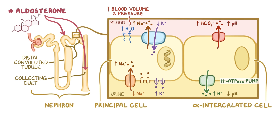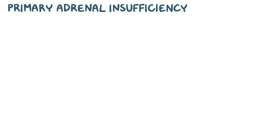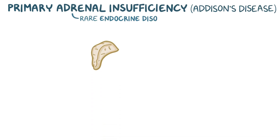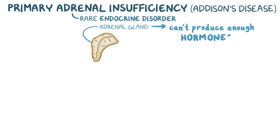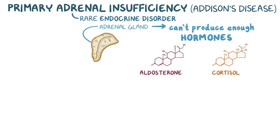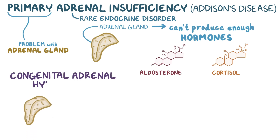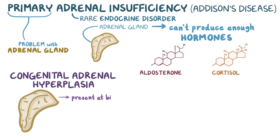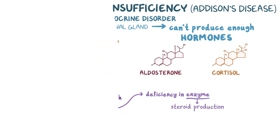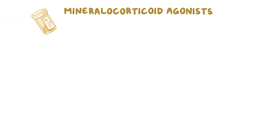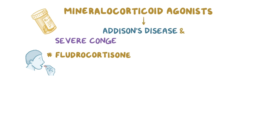Mineralocorticoid receptor agonists are used to treat pathological conditions where the mineralocorticoid level is lower than normal. For example, primary adrenal insufficiency, also known as Addison's disease, is a rare endocrine disorder where the adrenal gland cannot produce enough hormones — particularly aldosterone and cortisol. It's called primary because the underlying problem is damage to the adrenal glands themselves. Another cause is congenital adrenal hyperplasia, where enlarged adrenal glands present at birth result from a deficiency in an enzyme involved in steroid production. Mineralocorticoid agonists such as fludrocortisone can be taken orally to treat these conditions.